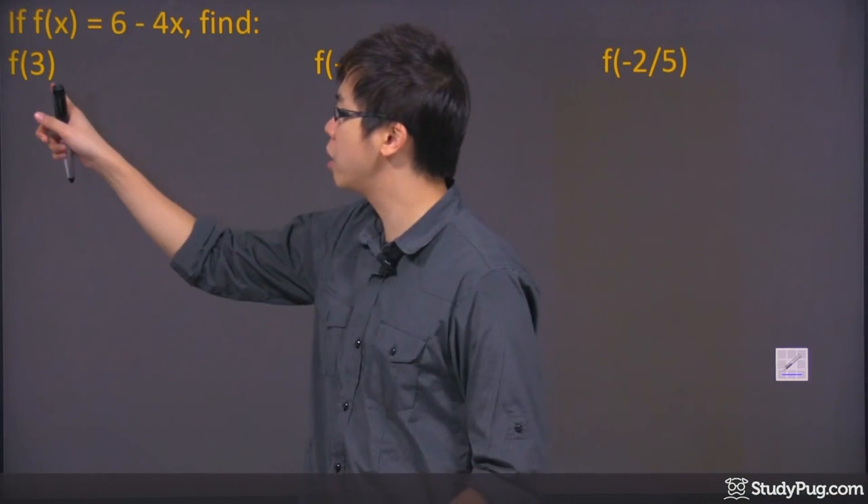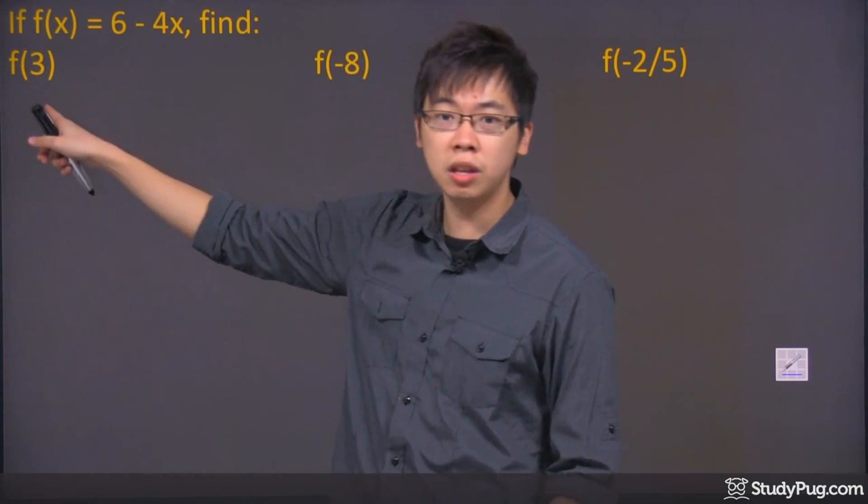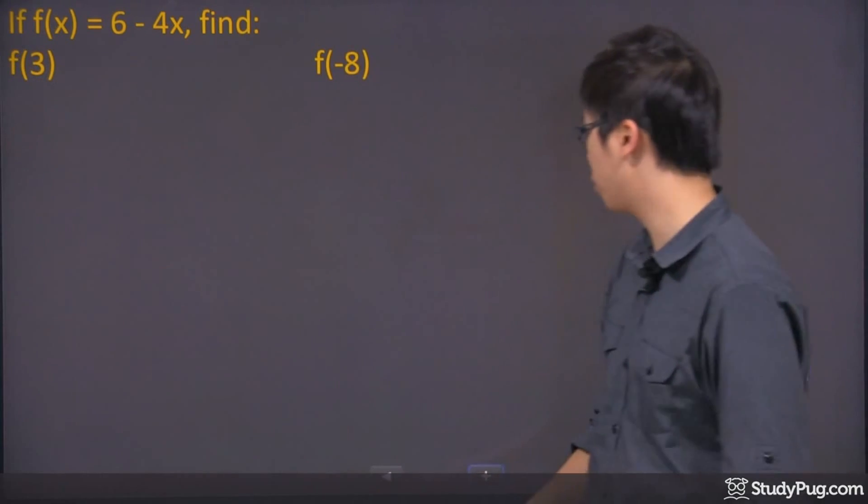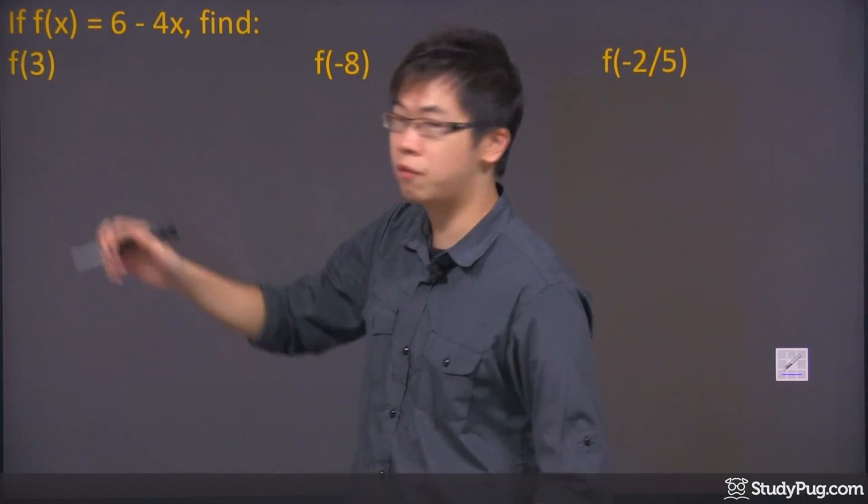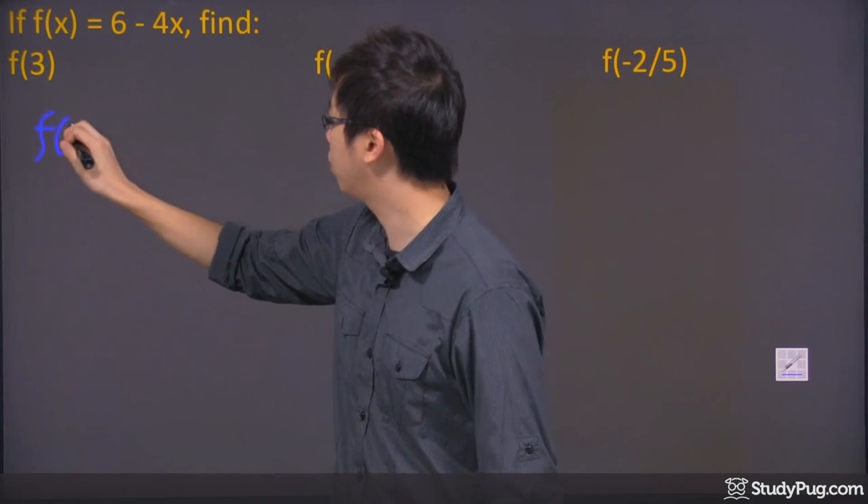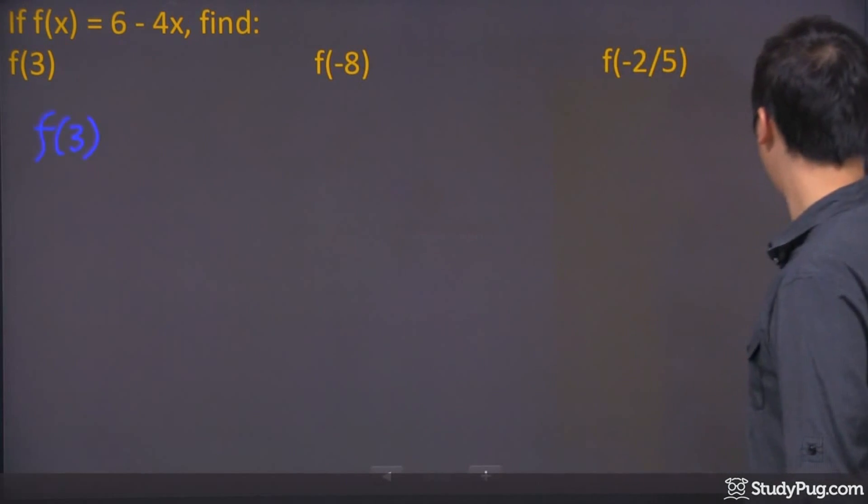So what you just have to do is this. Recognizing that f of x, in this case, we got f of 3. So that means if I rewrite everything, it will be f of 3. Let me just change the corner pin right here.